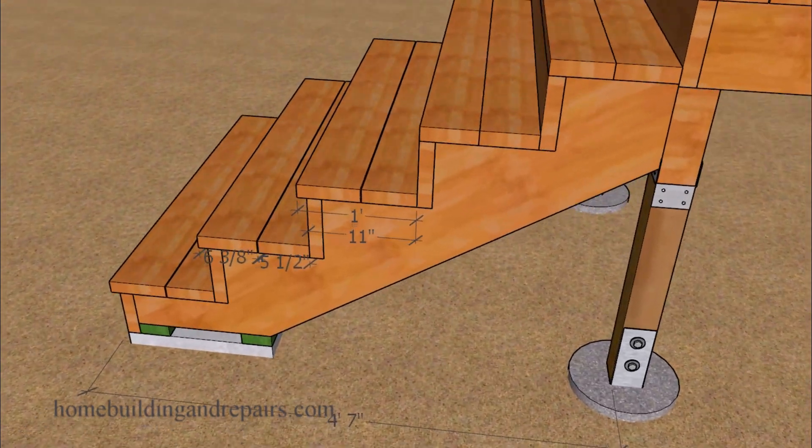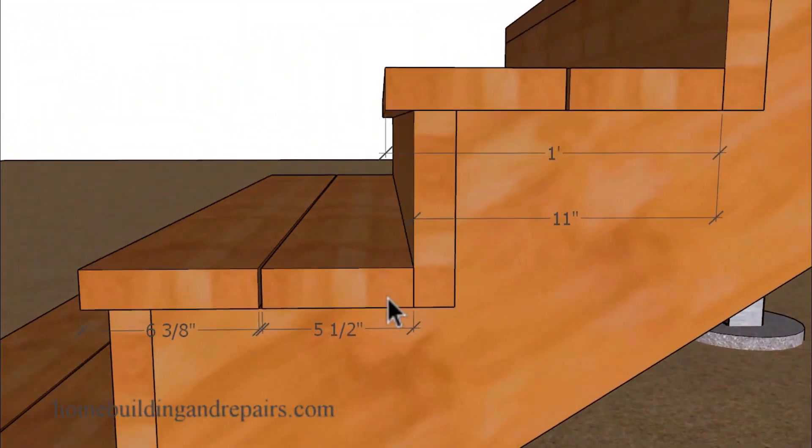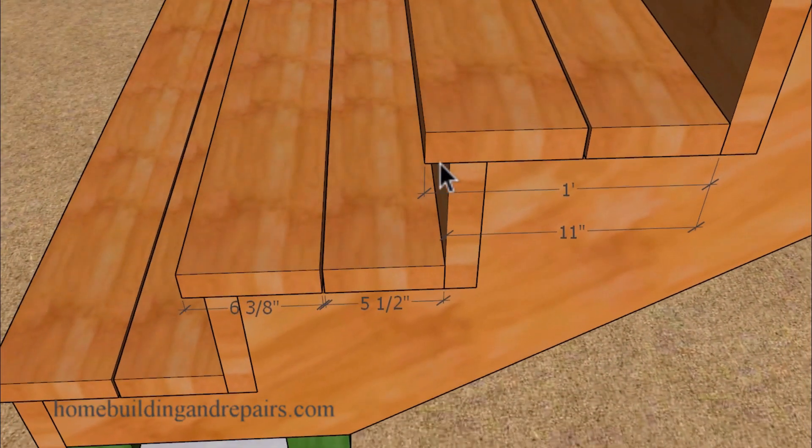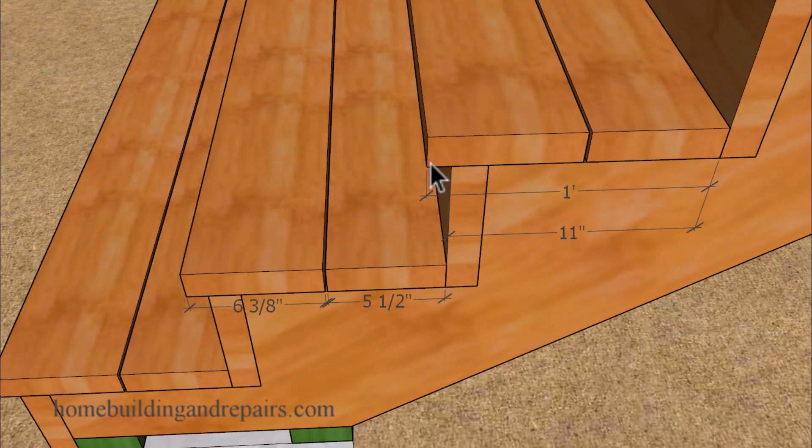Another option is to add a nosing. Leave a gap or don't leave a gap, and then use those measurements when you're laying out your stair stringer. We're still at an 11-inch step for our stringer layout, even though we have a nosing projecting out one inch.